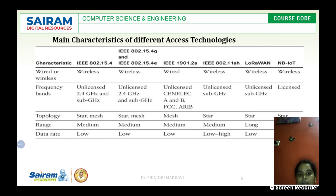These are the different characteristics of different access technologies, provided for your reference. When working with Zigbee, IEEE 802.15.4, and related protocols, these features are important to remember to distinguish one from another. That completes this chapter and the full module covered in today's session. Please refer to the important questions and follow the assignment questions given in Google Classroom. Thank you.